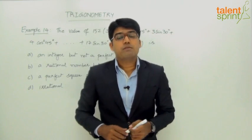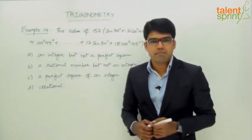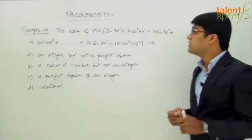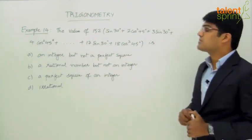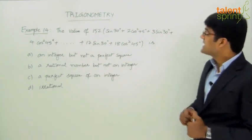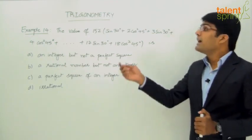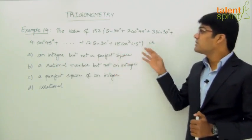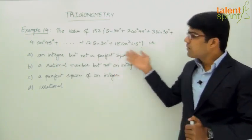Let us now discuss another example from one of the earlier SSE exam papers. The question says the value of 152 into sin 30 plus 2 cos square 45 plus 3 sin 30 plus 4 cos square 45 and so on plus 17 sin 30 plus 18 cos square 45 is what?